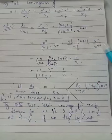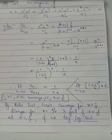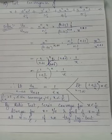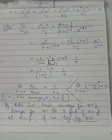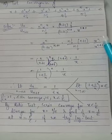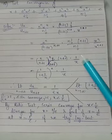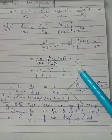Now, x^(n+1) using the exponential law can be written as x^n · x. Therefore, we can easily cancel x^n from both numerator and denominator and we are left with 1/x.